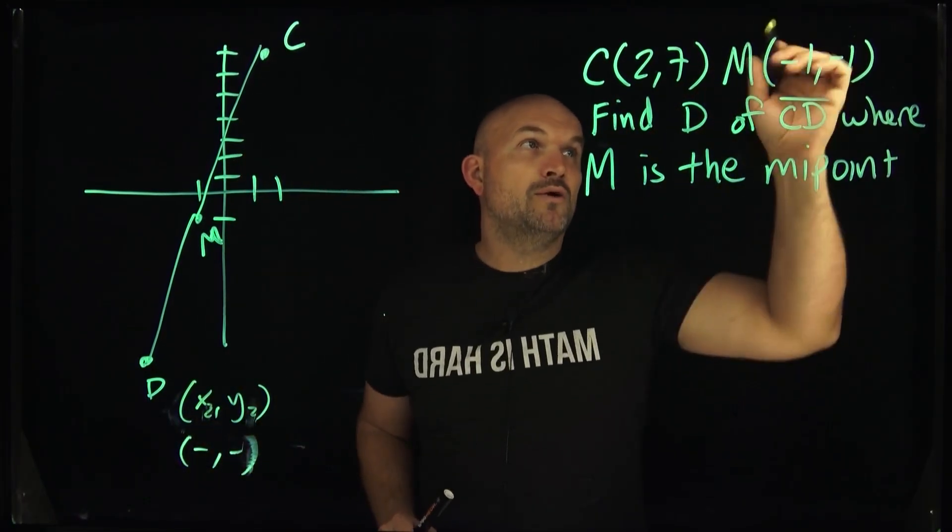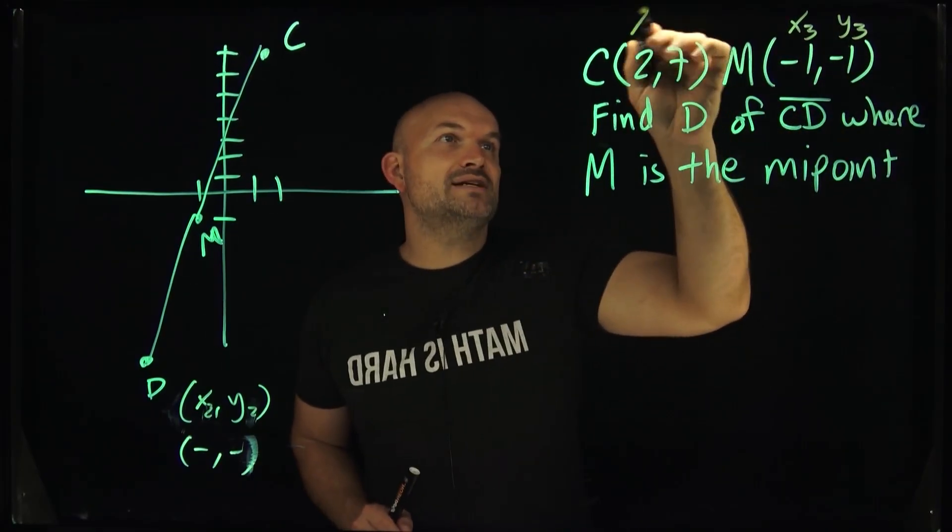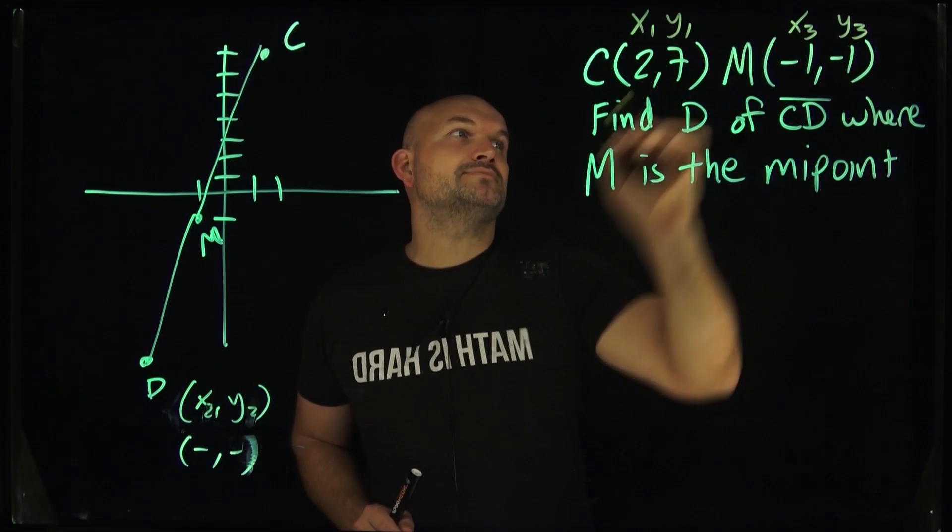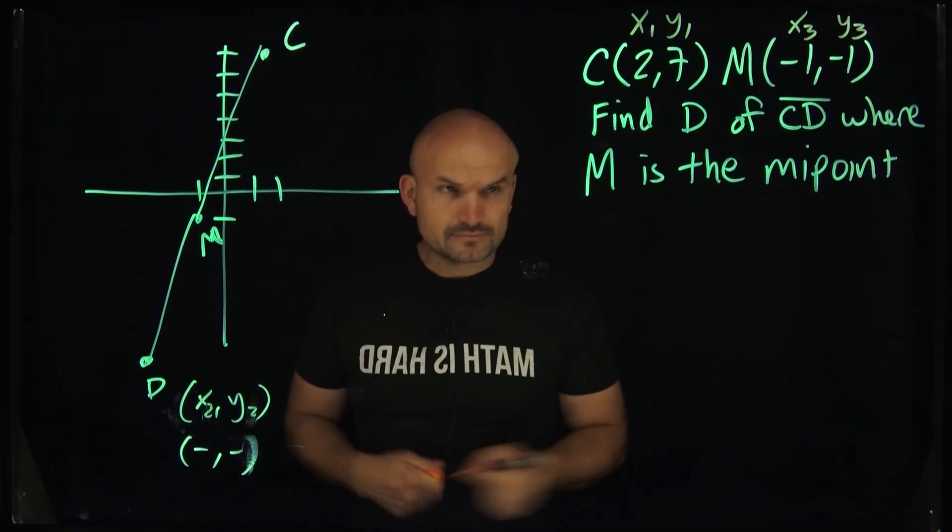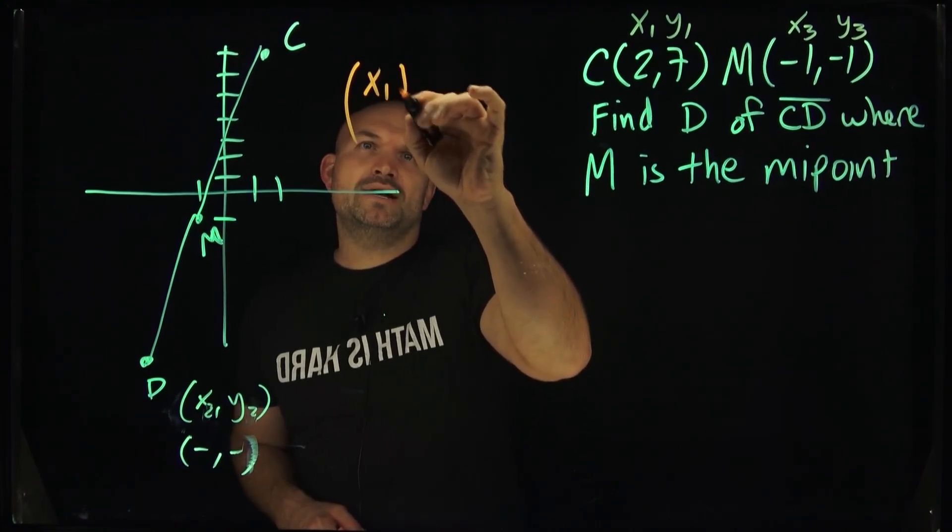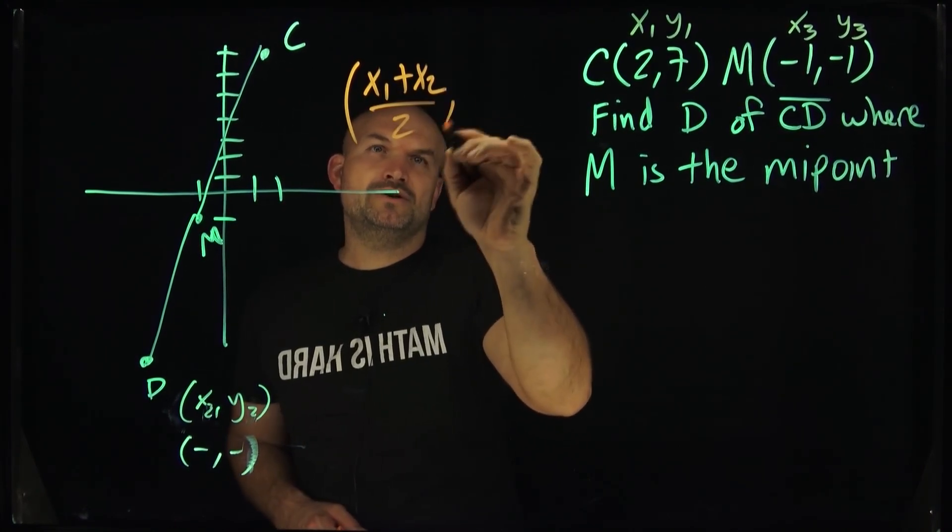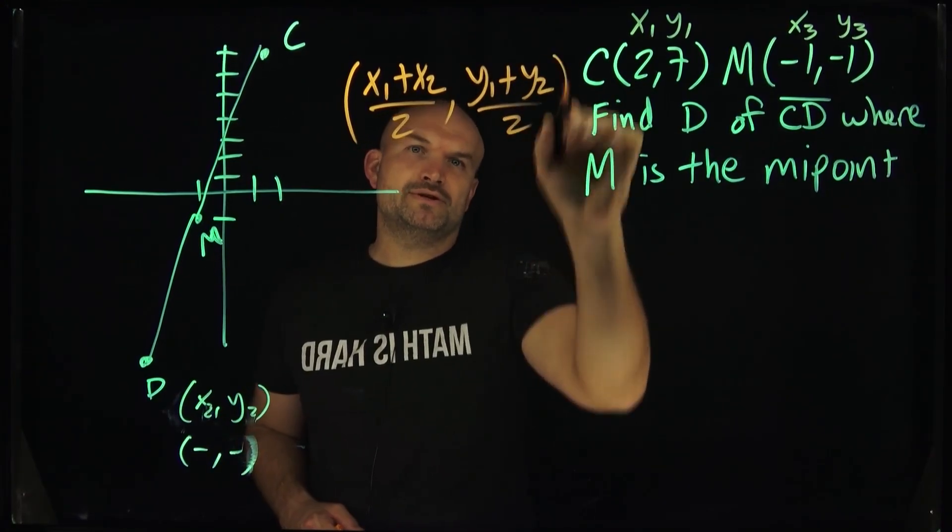Now, the midpoint, though, we're going to call these an X3 and a Y3. And we'll call this an X1 and a Y1. Okay? So remember, midpoint formula. What was the midpoint formula? Well, if you remember, the midpoint formula was simply X1 plus X2 divided by 2. And then a Y1 plus a Y2 divided by 2.